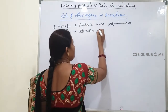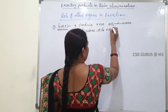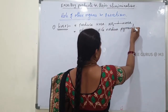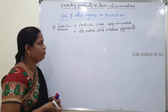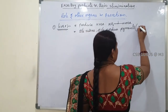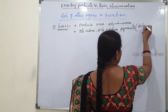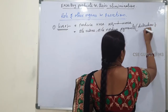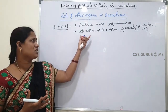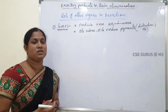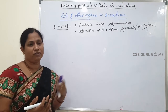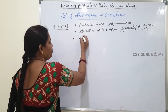The liver also eliminates bile pigments — bilirubin and biliverdin. These pigments are produced during the destruction of hemoglobin. When hemoglobin destruction takes place, bilirubin and biliverdin pigments are produced, and these pigments are eliminated to the outside in the form of faeces.